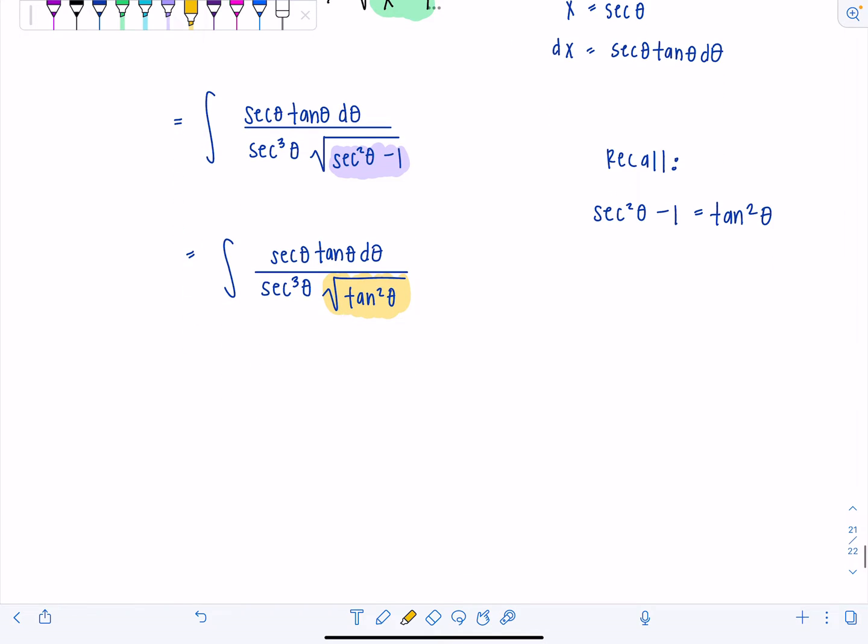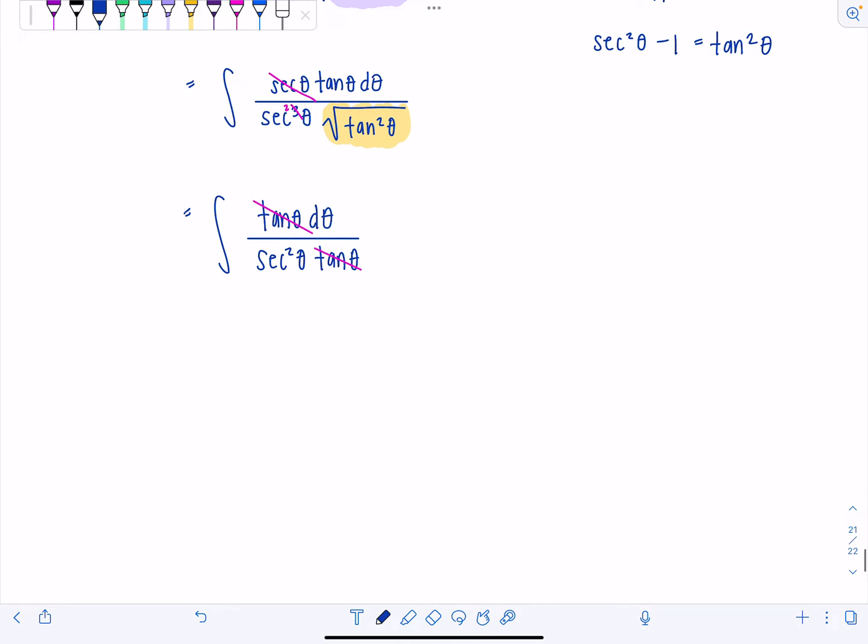Okay, so from here we can do all sorts of lovely cancellation. This secant is going to cancel with one of the secants in the denominator. And let's see what else results. We've got tan theta d theta over secant squared theta tan theta, cancel out tan theta as well. And secant squared theta has no business being in the denominator anymore.